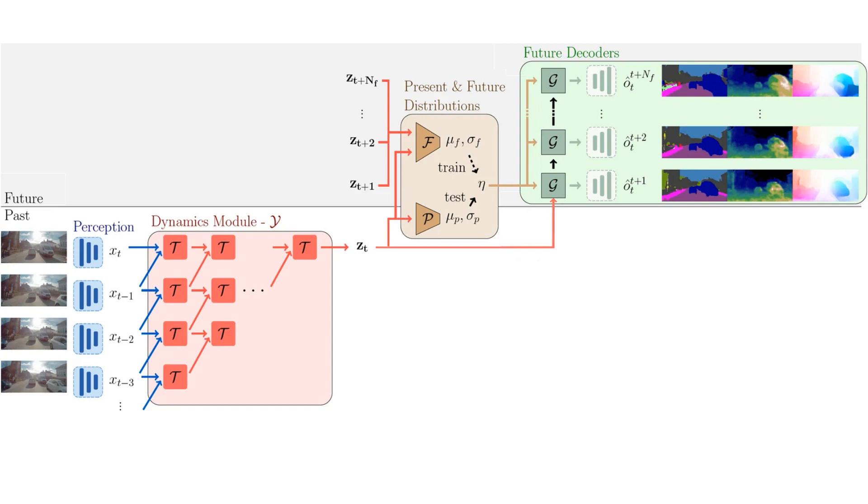At training time, we allow the model to have a privileged but compressed view of the future through the future distribution. As we cannot see the future at test time, we train the present distribution, using only the current state, to match the future distribution through a KL divergence loss. We can then sample from the present distribution during inference, when we do not have access to the future. We observe that this paradigm allows the model to learn accurate and diverse probabilistic future prediction outputs.